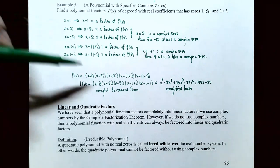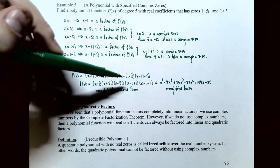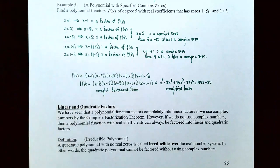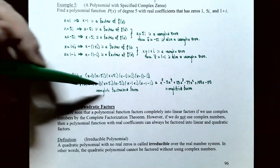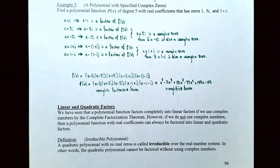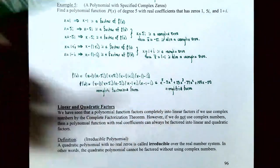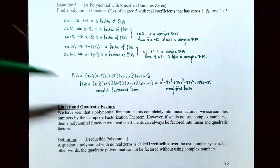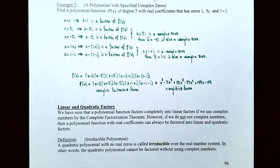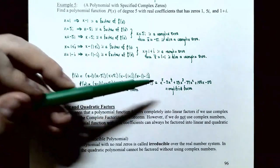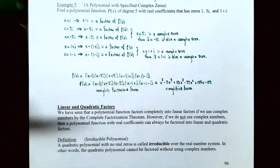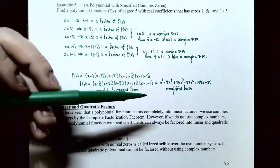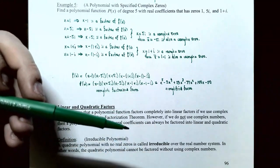Multiplying these five linear factors together, P(x) = (x − 1)(x − 5i)(x + 5i)(x − 1 − i)(x − 1 + i), which simplifies to x⁵ − 3x⁴ + 29x³ − 77x² + 100x − 50. This degree-5 polynomial has real zero x = 1 and complex zeros x = ±5i and x = 1 ± i.